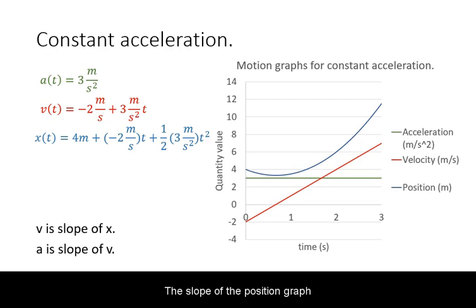The slope of the position graph will be the velocity at that time. When the velocity values are negative, the slope of the position graph will also be negative.